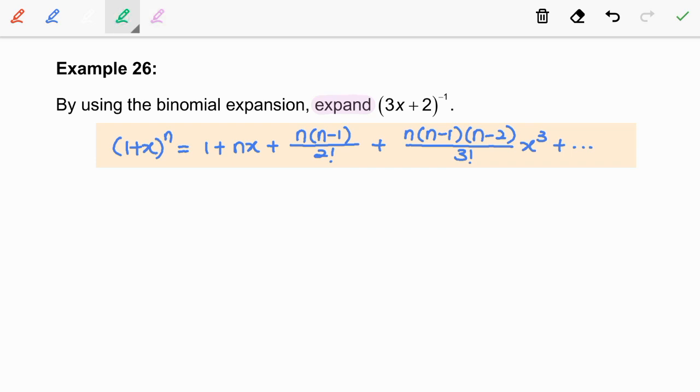In this case, the power number given is a negative integer, which is negative 1. So we are going to use this binomial formula.